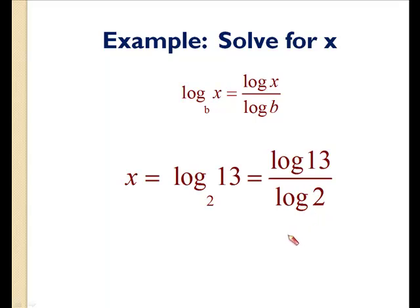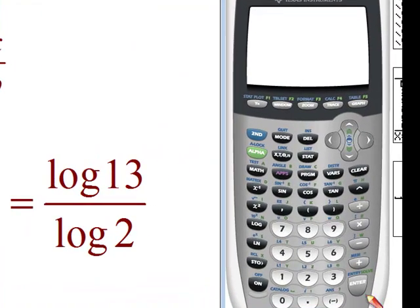And in our calculator, it's going to look something like this. So we have our trusty calculator, and I'm going to enter log base 10 of 13, divided by log base 10 of 2. I press enter, and I get 3.700439718. Just for this example, I'm going to round to the nearest hundredth. So 3.70 will suffice.